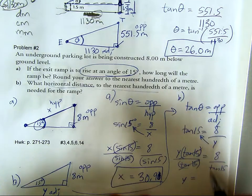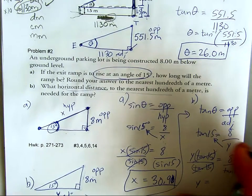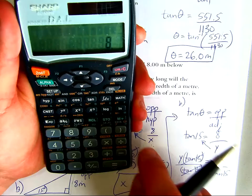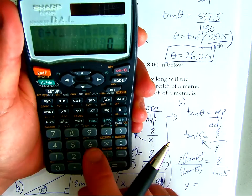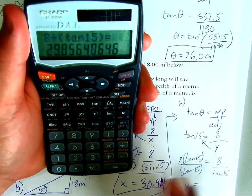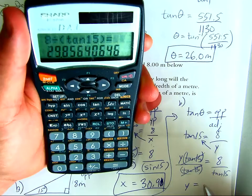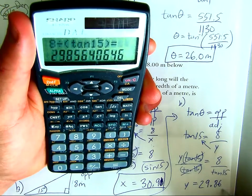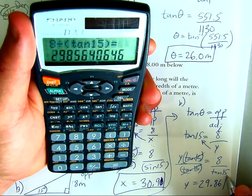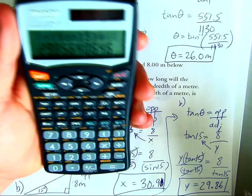So I'm going to get y is equal to... when I do 8 divided by, remember it's tan of 15, I get 29.86 to the nearest hundredth, so that's two decimal places.